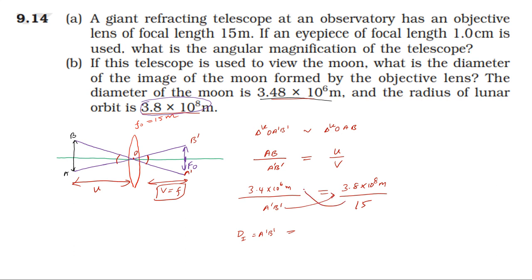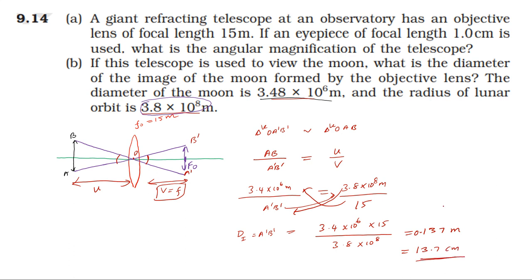So A'B' (image diameter) equals 3.48 × 10⁶ multiplied by 15, divided by 3.8 × 10⁸. This gives approximately 0.137 meters, which is 13.7 centimeters. So the image diameter of the moon formed by the objective lens is 13.7 cm.